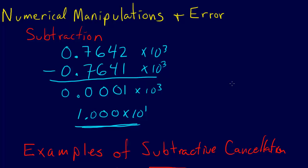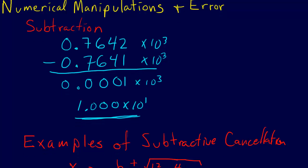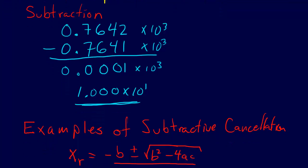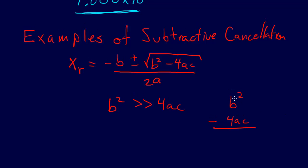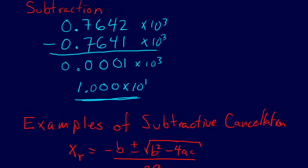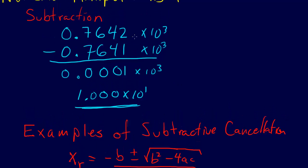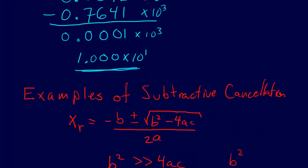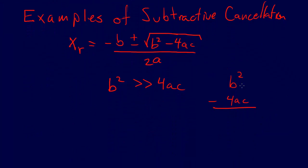I paused the video because I want to illustrate this. I was thinking that we have this subtractive cancellation — b squared minus 4ac — where b squared is much greater than 4ac. But this actually isn't a subtractive cancellation problem, because subtractive cancellation is when we're combining two numbers that are very close to each other. These two numbers are not very close to each other. In fact, 4ac is much smaller than b squared.